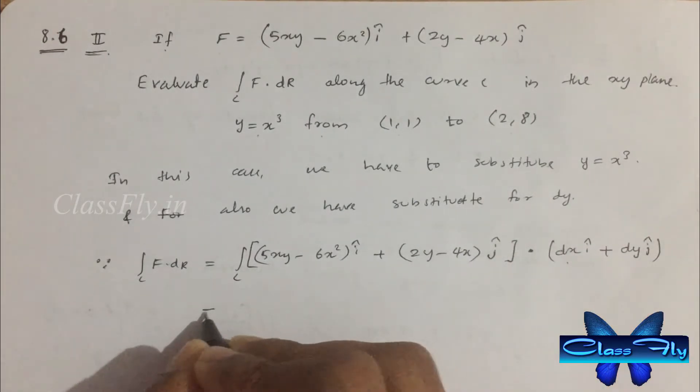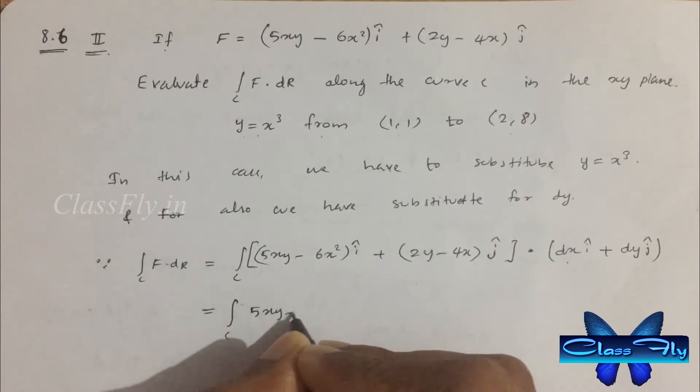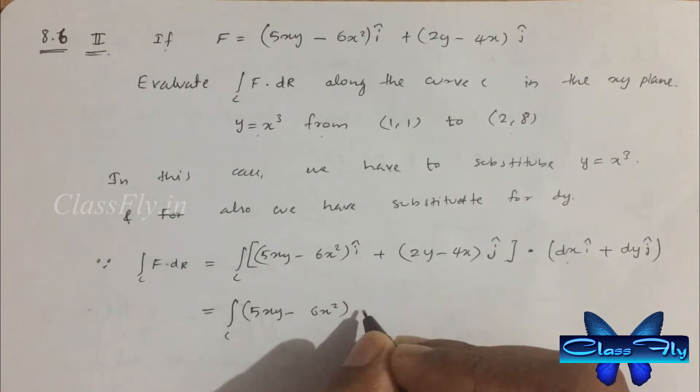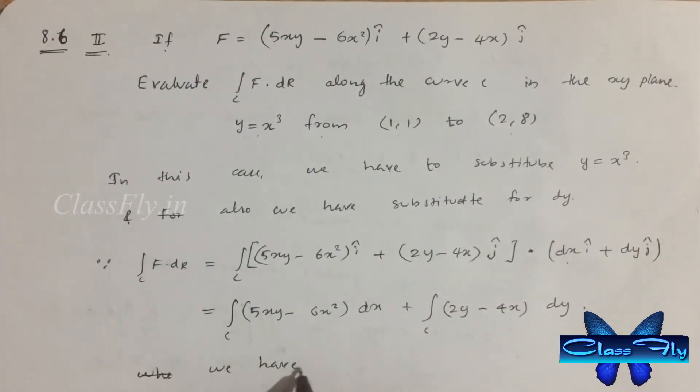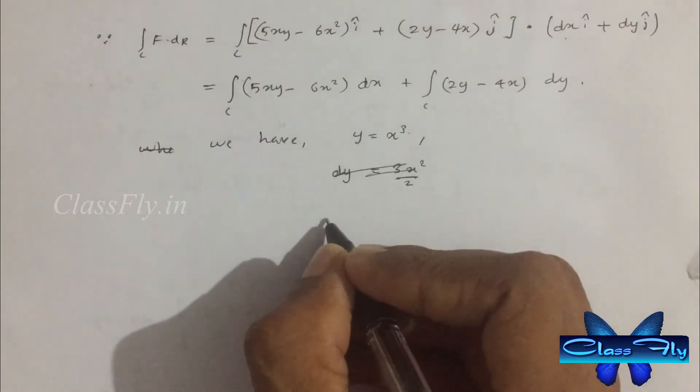This is equal to integral c 5xy minus 6x square dx plus integral c 2y minus 4x dy. Here we have to change y equal to x cube and also we have to substitute for dy in terms of dx so we can integrate this simply.